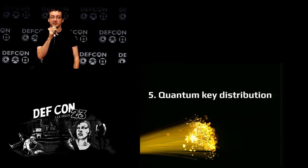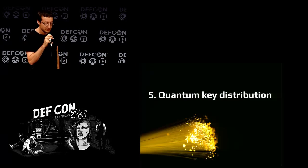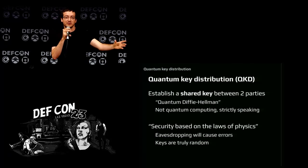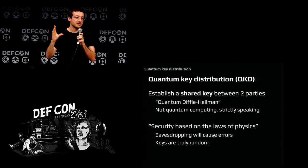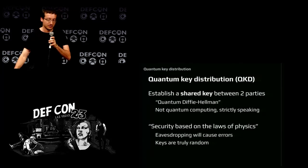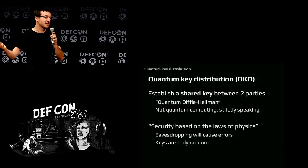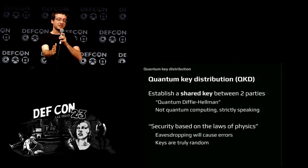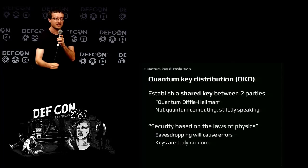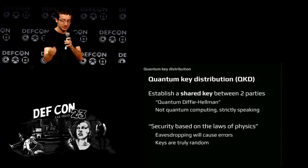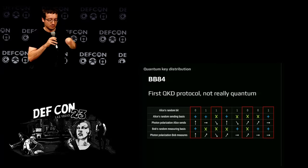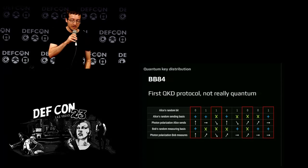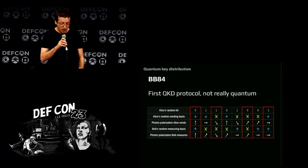The fifth area is quantum key distribution, also known as quantum cryptography. The problem is key agreement — it's like a quantum Diffie-Hellman, but using physical phenomena directly rather than quantum computing. The argument is that security is as strong as the laws of physics: a man-in-the-middle attack is detected because observing a photon modifies it, you cannot copy quantum bits, and the keys are truly random. The simplest and most standard scheme is BB84, designed by two Canadian researchers in 1984.